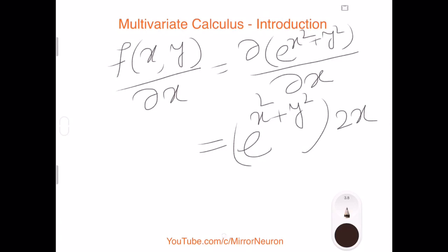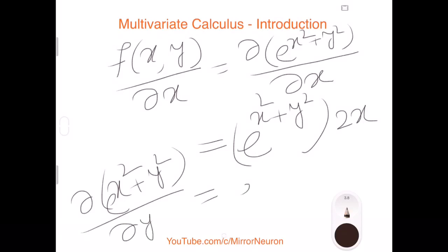And likewise, I can do derivative of e to the power x square plus y square with respect to y, then this would become e to the power of x square plus y square times 2 times the y.